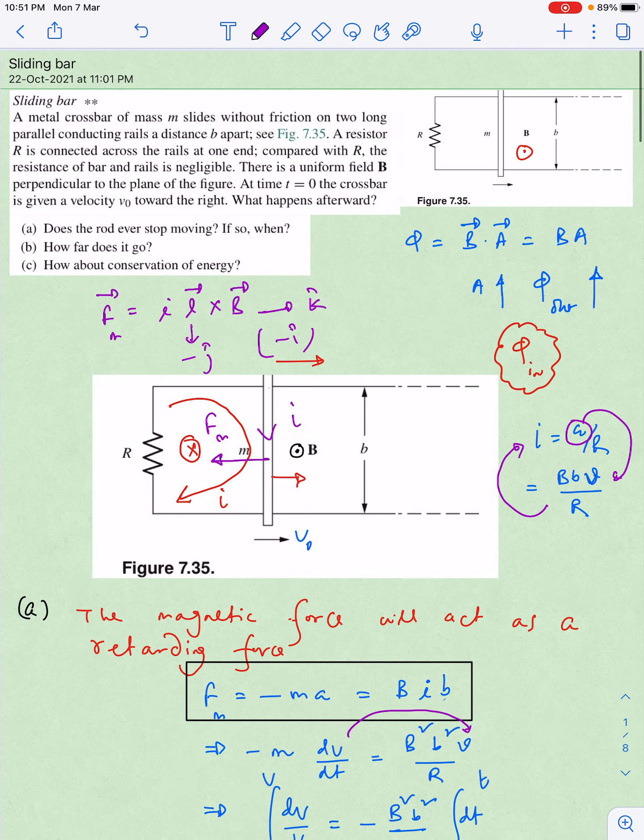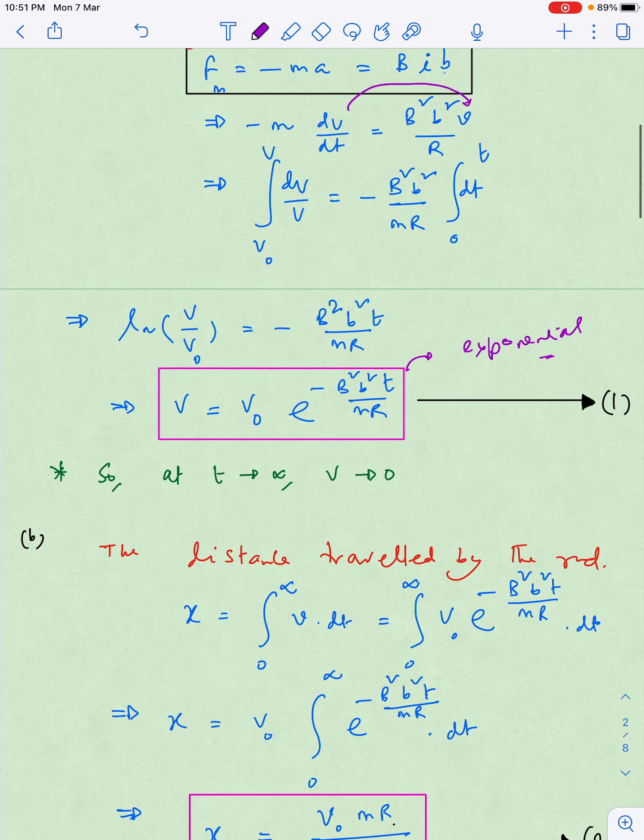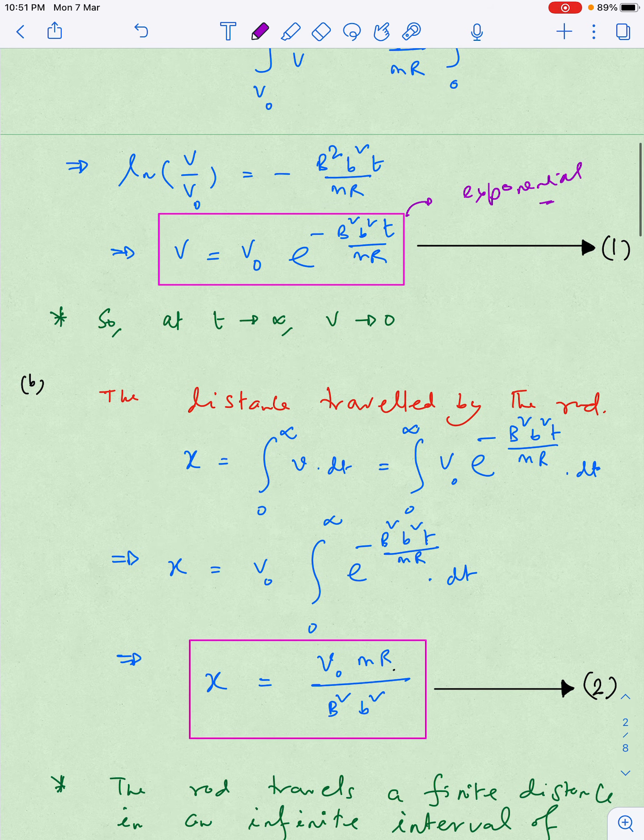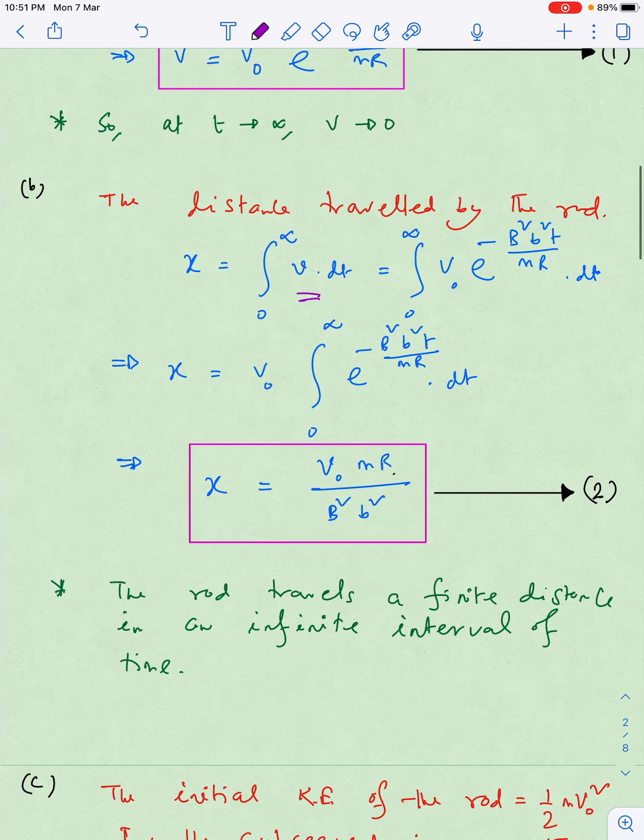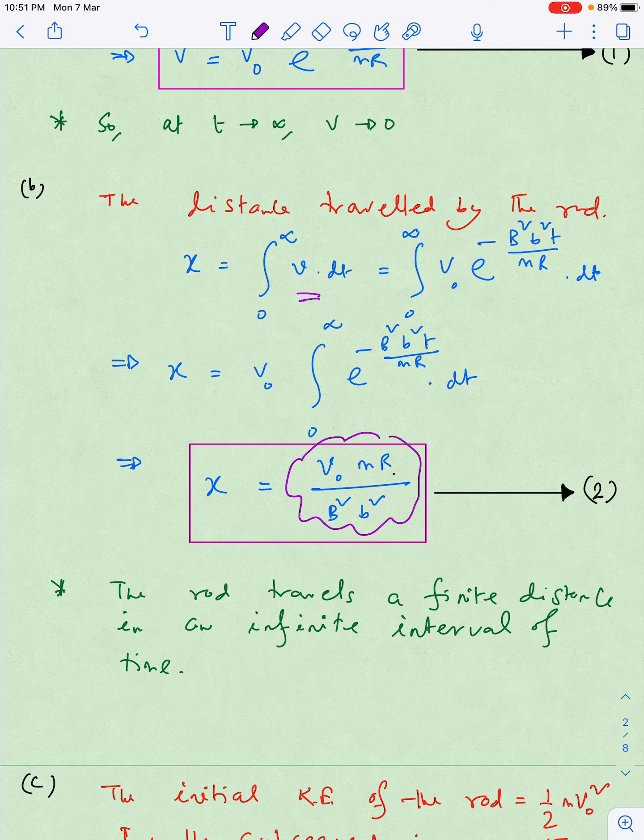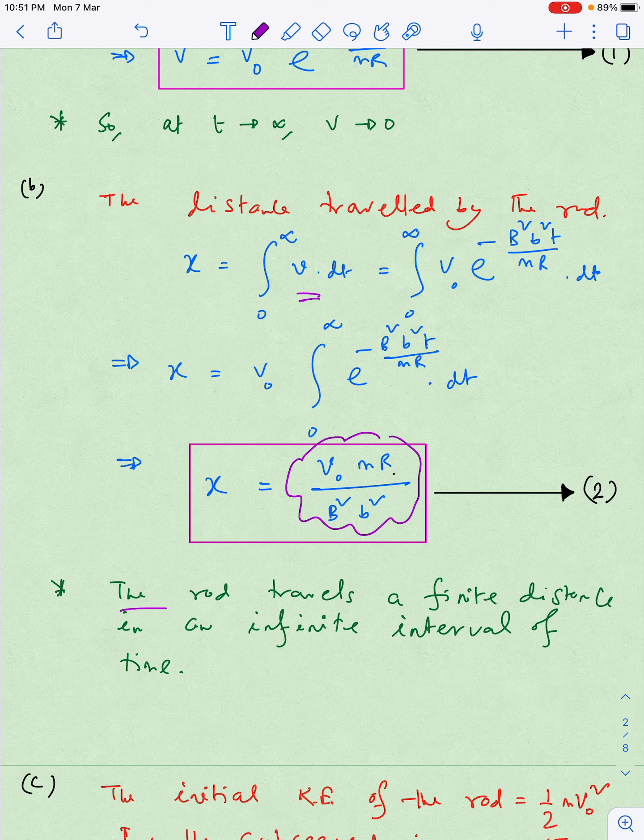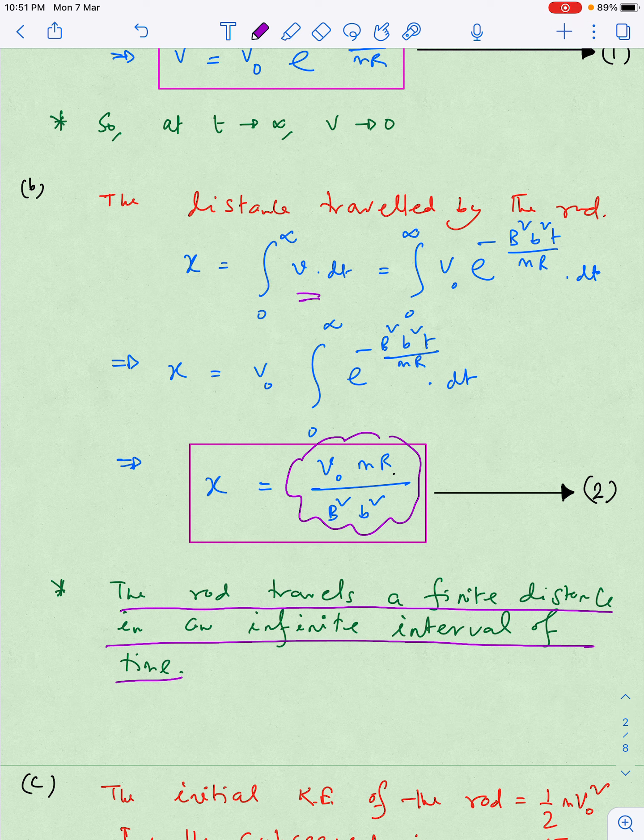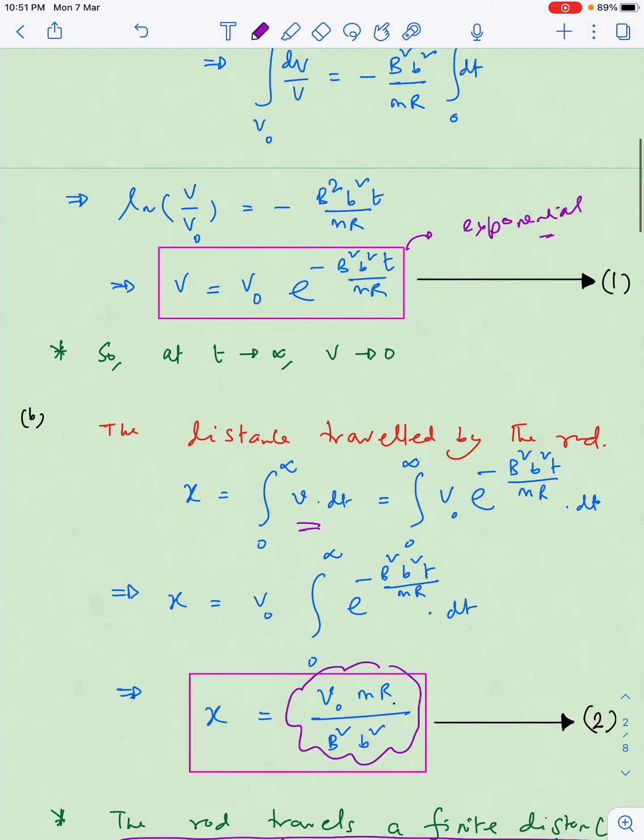Next question they are asking how far does it go. We have to calculate the distance traveled, so in that case we will simply integrate zero to infinity v dt and we get an answer. So the most interesting fact, the astonishing fact in case of physics is that the rod travels a finite distance in an infinite interval of time. So agar question mein ye kabhi puchha jata hai multiple option correct mein ki is it possible for a particle or for a rigid body to cover a finite distance in infinite point of time, yes it is possible, example apke saamne hai.